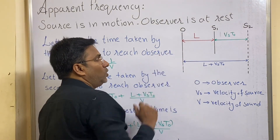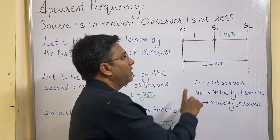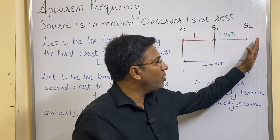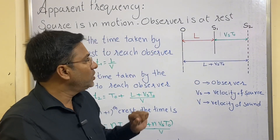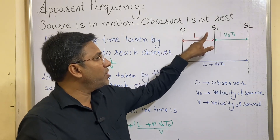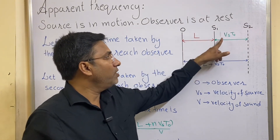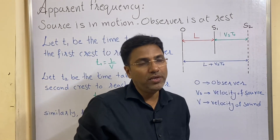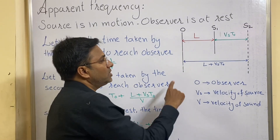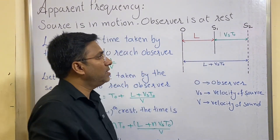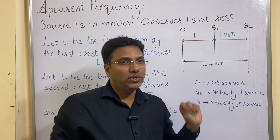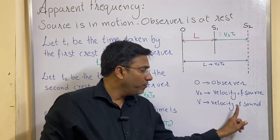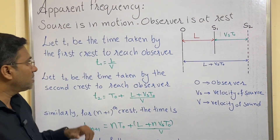In the diagram, you can see here: O is the observer, which is at rest, and the initial position of the source is S1, and then the source is moving away from the observer. L is the distance between the observer and the initial position of source S1, and VsT0 is the distance between the initial position and the next position of the source. The total distance between the observer and the final position of the source is L plus VsT0. You have to know: Vs is the velocity of source, and V is the velocity of sound.